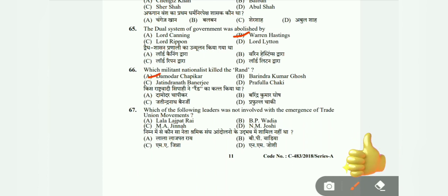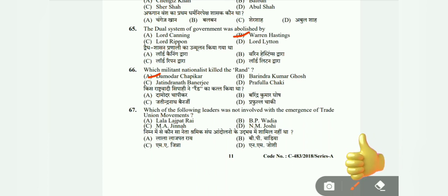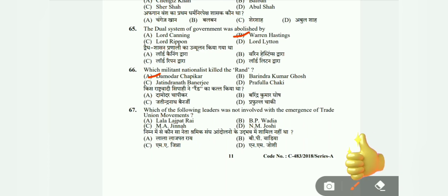Question 67: Which of the following leaders was not involved with the emergence of a trade union movement? Options: Lala Lajpat Rai, B.P. Wadia, M.A. Chitra, and M.A. Jinnah. The correct answer is C, M.A. Jinnah.